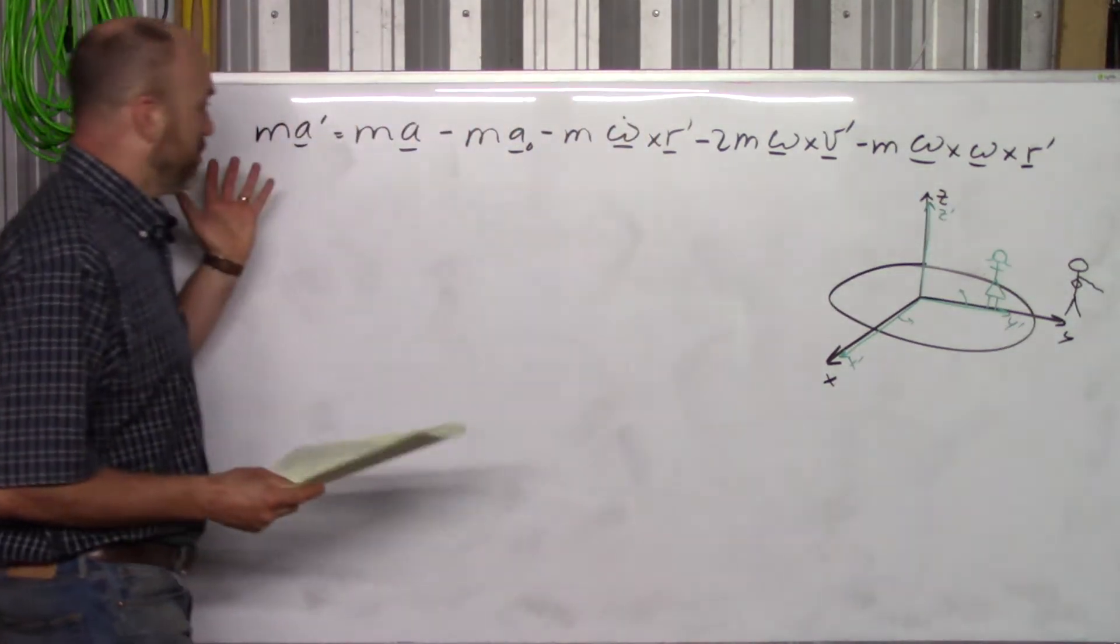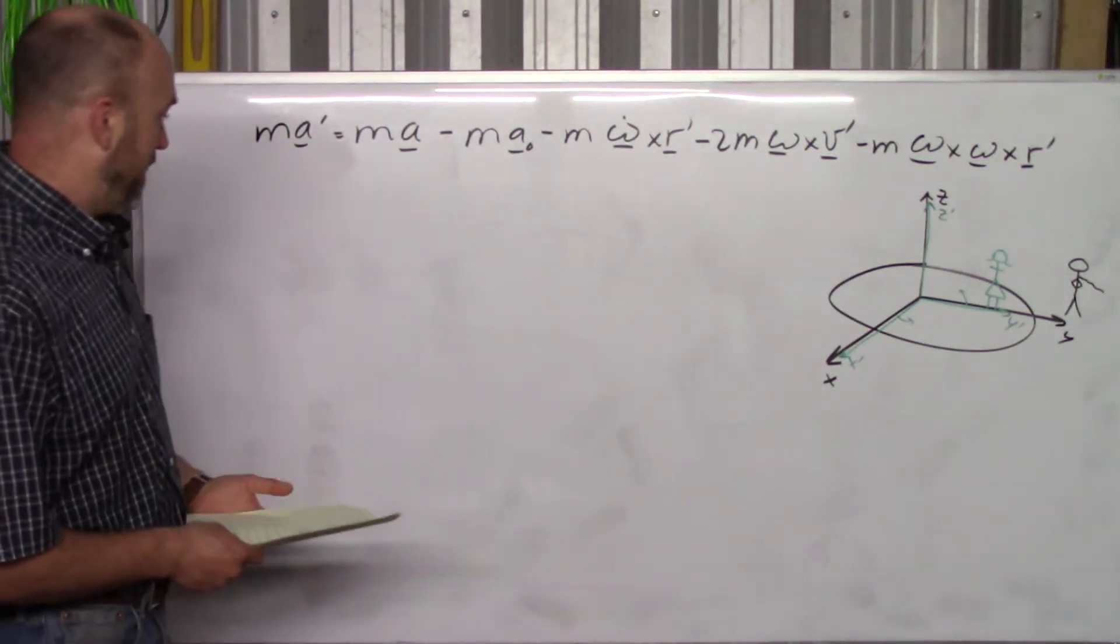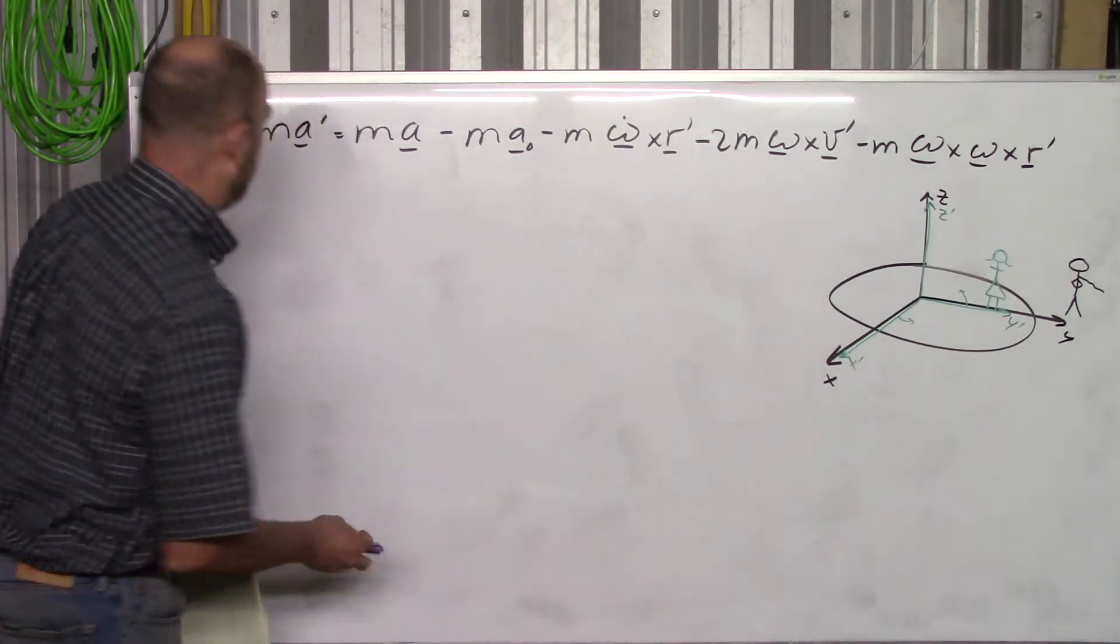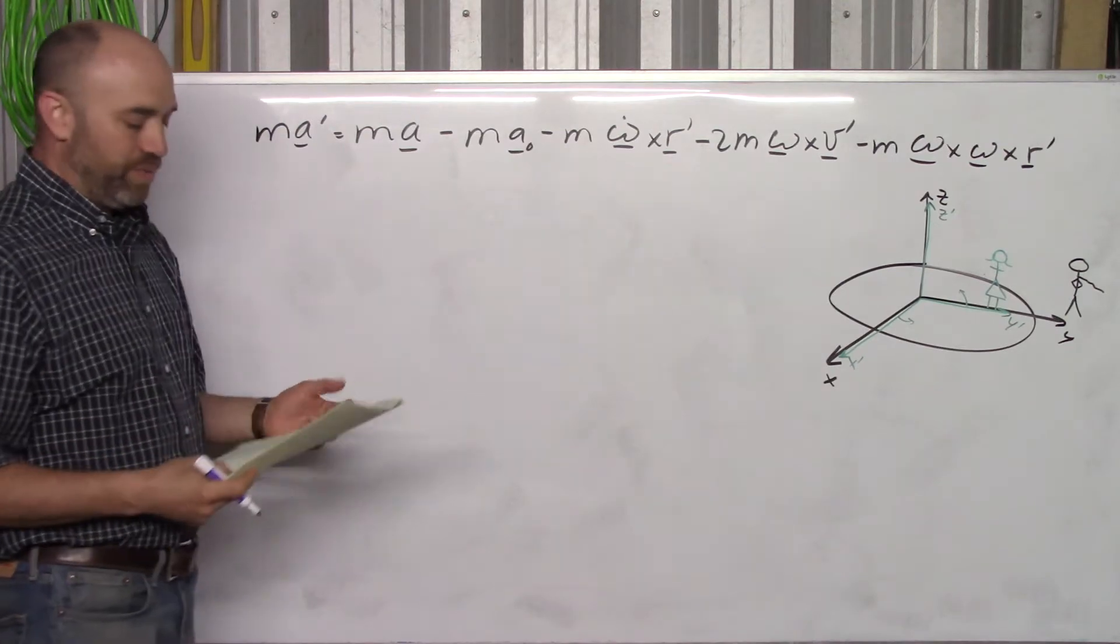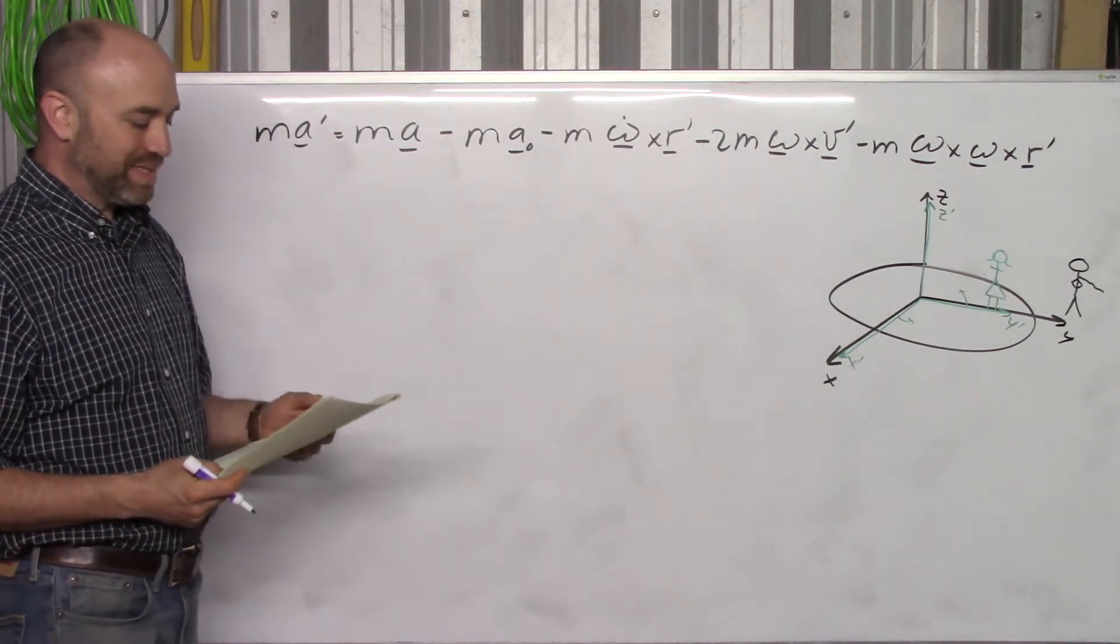So you apply the equation here, and this piece here is the MX double dot prime. Now is this thing accelerating?